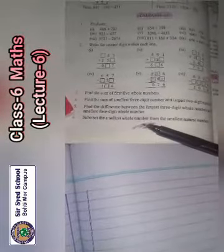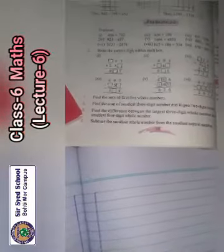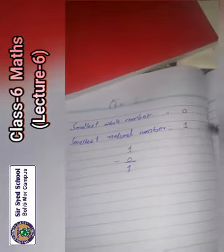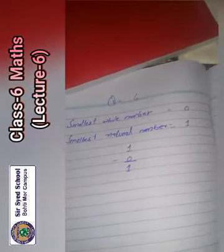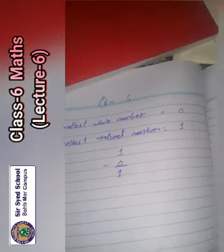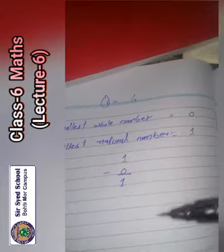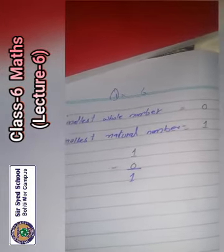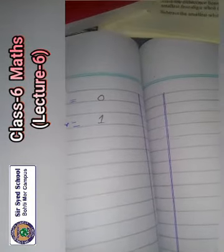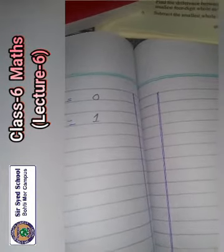Now we solve last question, question number six. Subtract the smallest whole number from the smallest natural number. Smallest whole number is 0 and smallest natural number is 1. This means subtract 0 from 1, the answer will be 1. Today's lecture is done. I hope you understood. You need to practice these questions. Complete till exercise 8.2. Allah hafiz, take care.